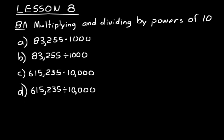For example, look at the first practice problem we have here. 83,255 times 1,000. Well, you would just write down 83,255, and multiplying that by 1,000 is like adding three more places on there. We've talked about that before.